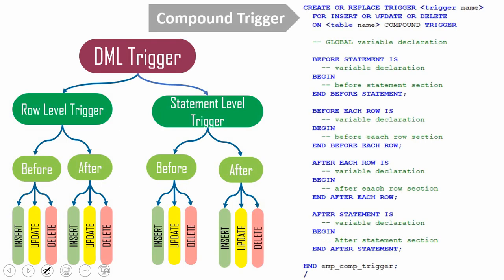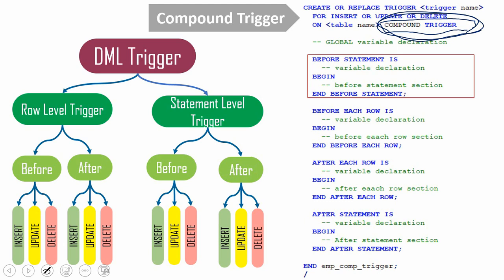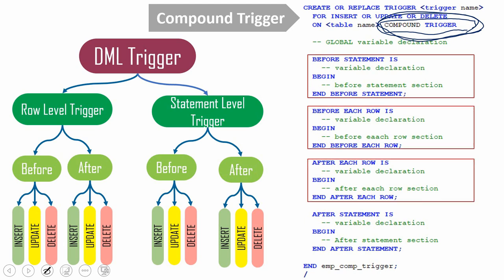Here is the syntax of a compound trigger. The key keyword that differentiates a compound trigger from an individual trigger is the keyword COMPOUND TRIGGER. The syntax is: CREATE OR REPLACE TRIGGER trigger_name FOR INSERT OR UPDATE OR DELETE ON table_name followed by COMPOUND TRIGGER. This trigger has four sections: before statement section, before each row section, after each row section, and after statement section.